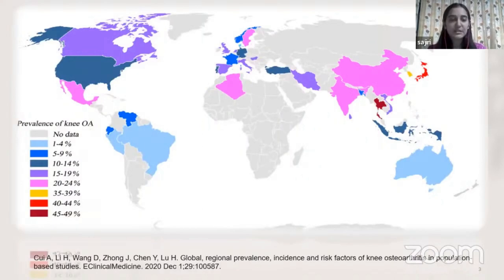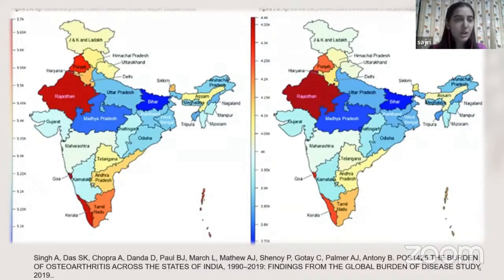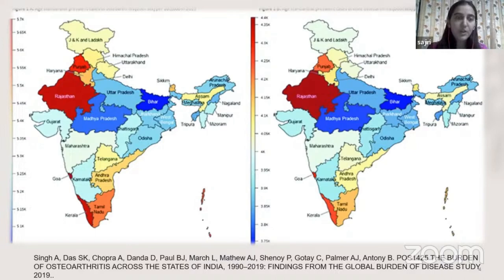If we see the prevalence of knee osteoarthritis, there is a recent article from 2020 where they found the global and regional prevalence, incidence, and risk factors of knee osteoarthritis. In India, it is around 22 to 24% prevalent. Out of all types of osteoarthritis, knee osteoarthritis is highly prevalent in our country. Looking at regional prevalences, Uttar Pradesh, followed by Maharashtra, followed by West Bengal are highly prevalent. Age-wise, population-based prevalence is higher in Goa, Rajasthan, and Kerala. In our state, Maharashtra, we have the highest prevalence of knee osteoarthritis.